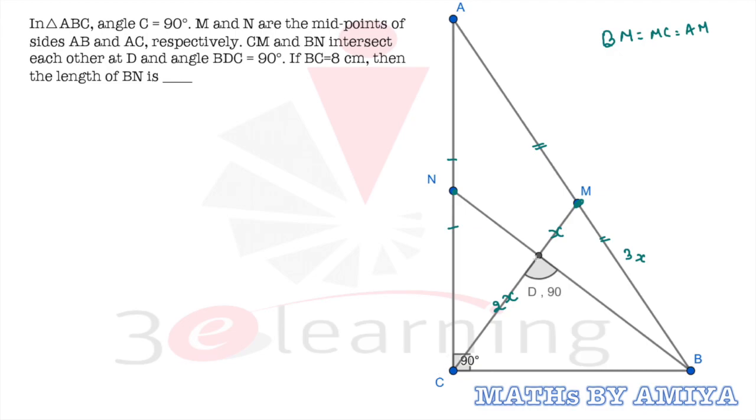I am again repeating. D is the centroid because this is a point of intersection. We assume CD is 2X, then DM should be X because centroid divides median in 2 is to 1 ratio. So our total MC length is nothing but 3X. And we know MC is equal to half of AB. And that equal to BM, it should be nothing but 3X. This angle is 90 degree. So this angle must be 90 degree.